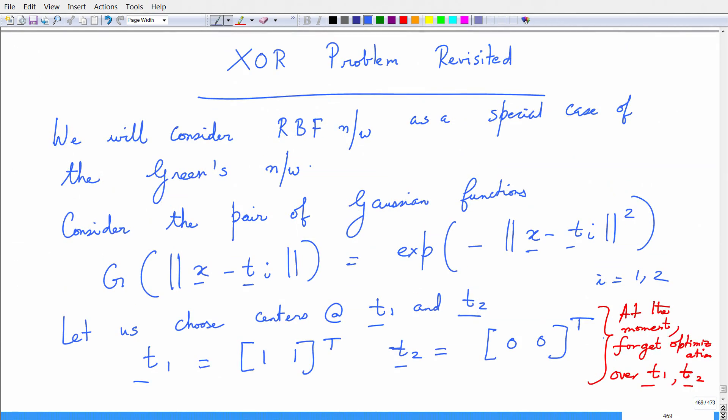What we have done is we have illustrated how you can solve the XOR problem using an RBF network. But instead of having a hidden node that corresponds to every data point, I choose my centers t_1 and t_2 appropriately that I can use in my hidden units. I set up this problem, and then I can solve for this problem using the RBF network.